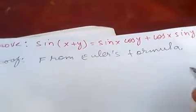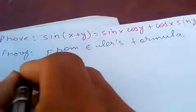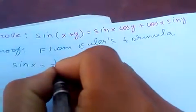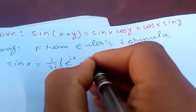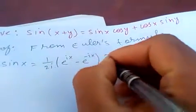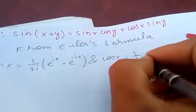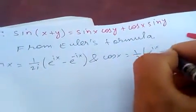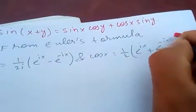From Euler's formula we know that sine of x is 1 upon 2i times (e to the ix minus e to the minus ix), and cos of x is 1 upon 2 times (e to the ix plus e to the minus ix).